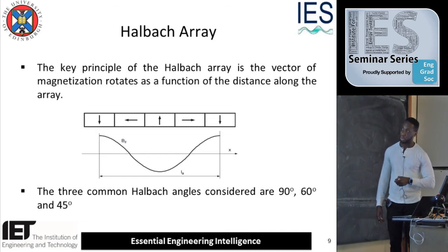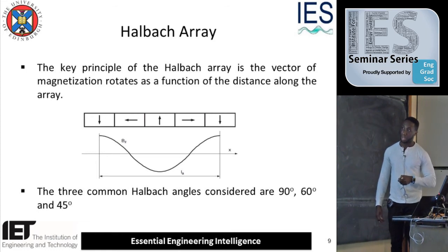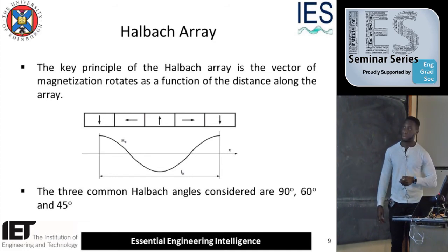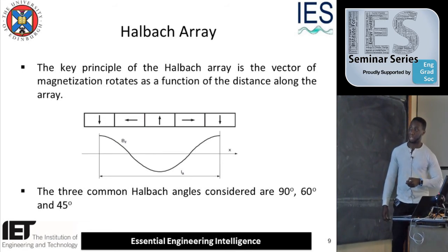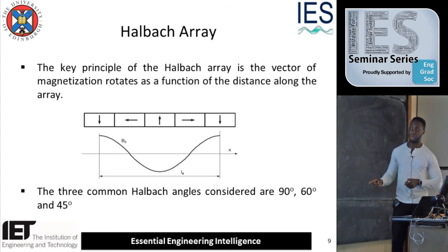Just a brief principle — I tried not to put too many formulas here. The principle behind the Halbach arrays is that the magnetization rotates as you move along the array. You can see this is a typical 90-degree Halbach array, and the resulting flux density from this sort of arrangement, ideally, is a smooth sinusoidal waveform. There are three common Halbach arrays in this field: you have your 90 degrees, your 60 degrees, and your 45 degrees.